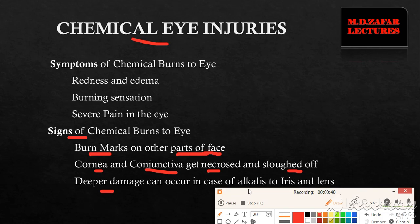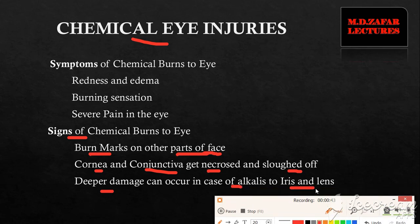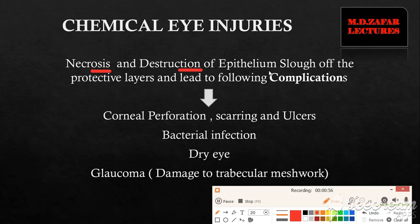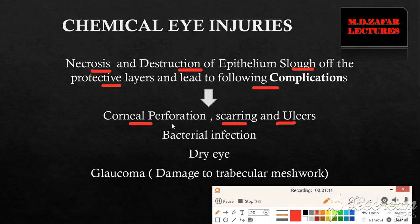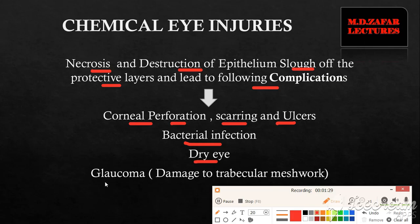Deeper damage can also occur in the case of alkalis, affecting the iris and lens. Necrosis and destruction of the epithelium leads to sloughing off of the protective layers, resulting in complications including corneal perforation, corneal scarring, and corneal ulcer formation. Because of perforation there will be secondary bacterial infection, and damage to the lacrimal passages leads to absence of lacrimal fluid causing dry eye. Glaucoma can also occur due to damage to the trabecular meshwork.